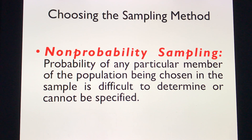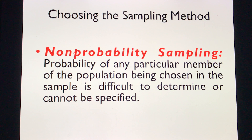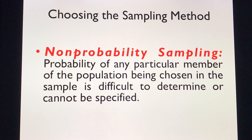In non-probability sampling, the probability of any particular member of the population being chosen in the sample is difficult to determine, and it cannot be specified.